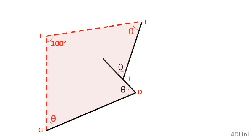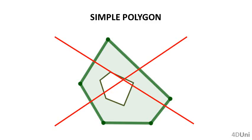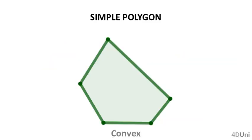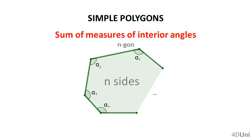Before we continue, let's talk about simple polygons. A simple polygon is one in which only consecutive sides intersect and only at their endpoints. This polygon doesn't have holes. Simple polygons can be either convex or non-convex. A simple convex polygon is one in which all interior angles measure less than 180 degrees. If a simple polygon is non-convex, it is called concave — it has at least one interior angle with measure greater than 180 degrees.